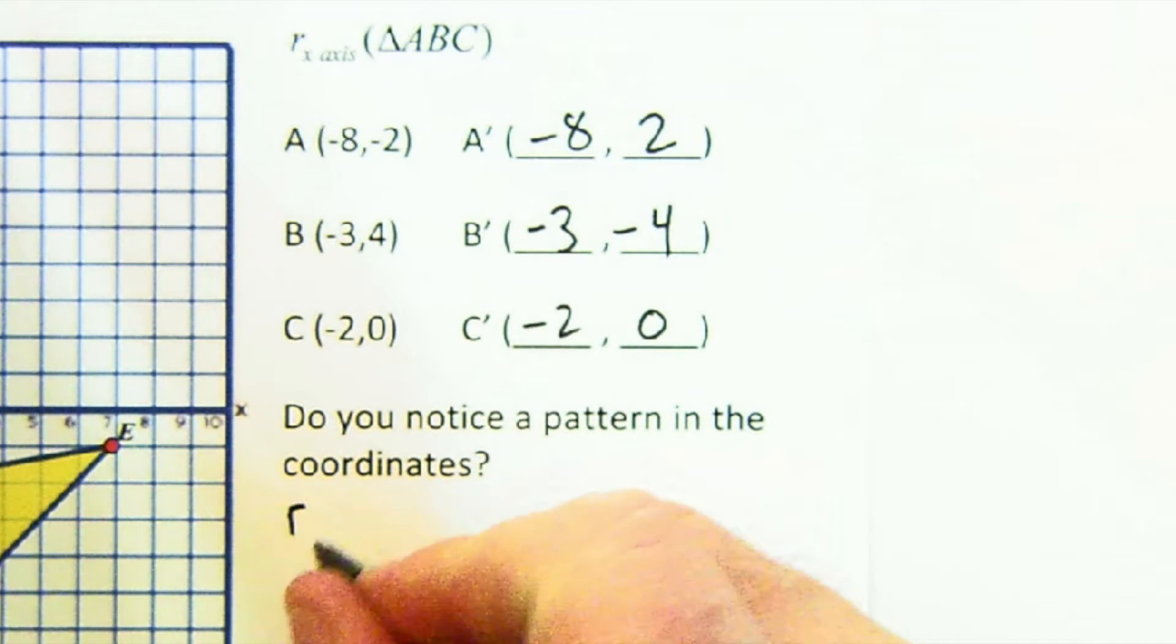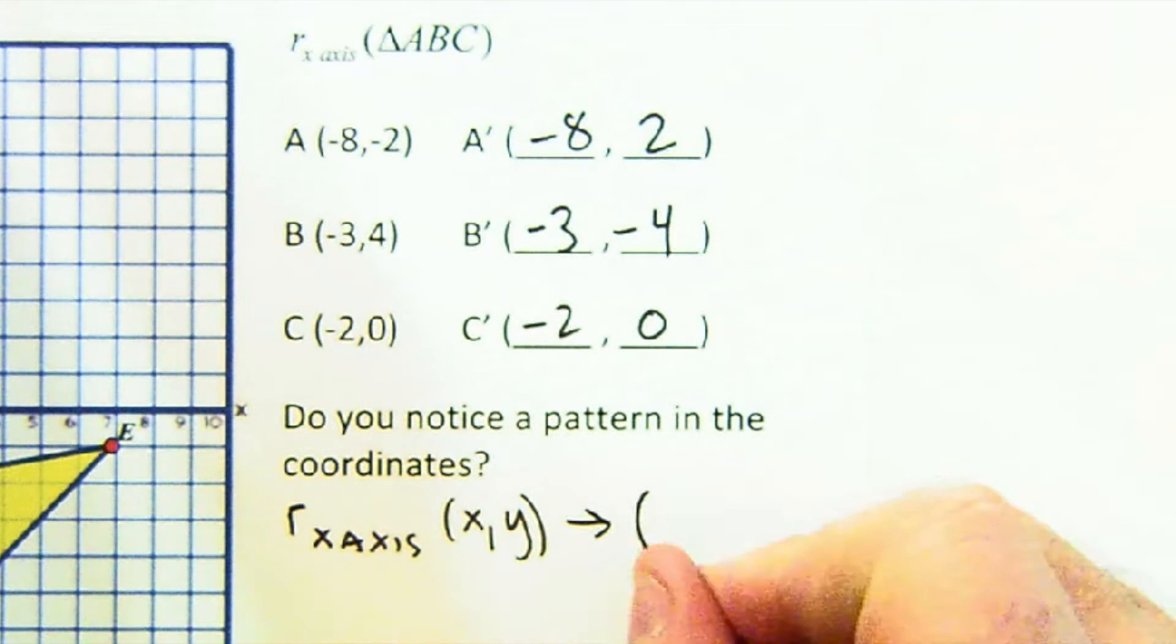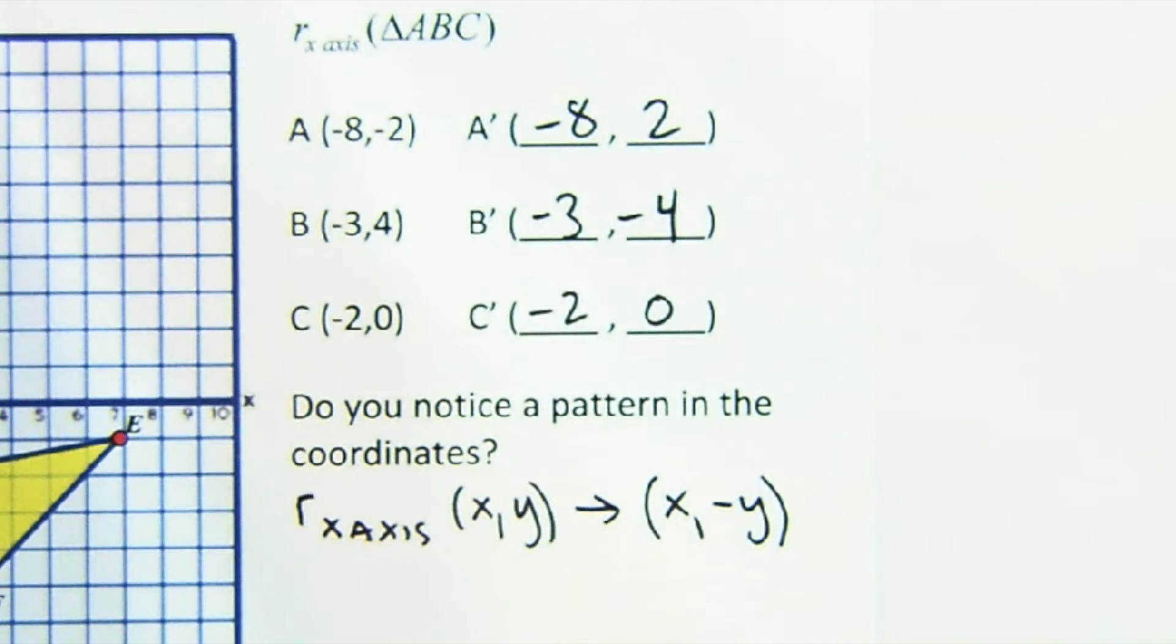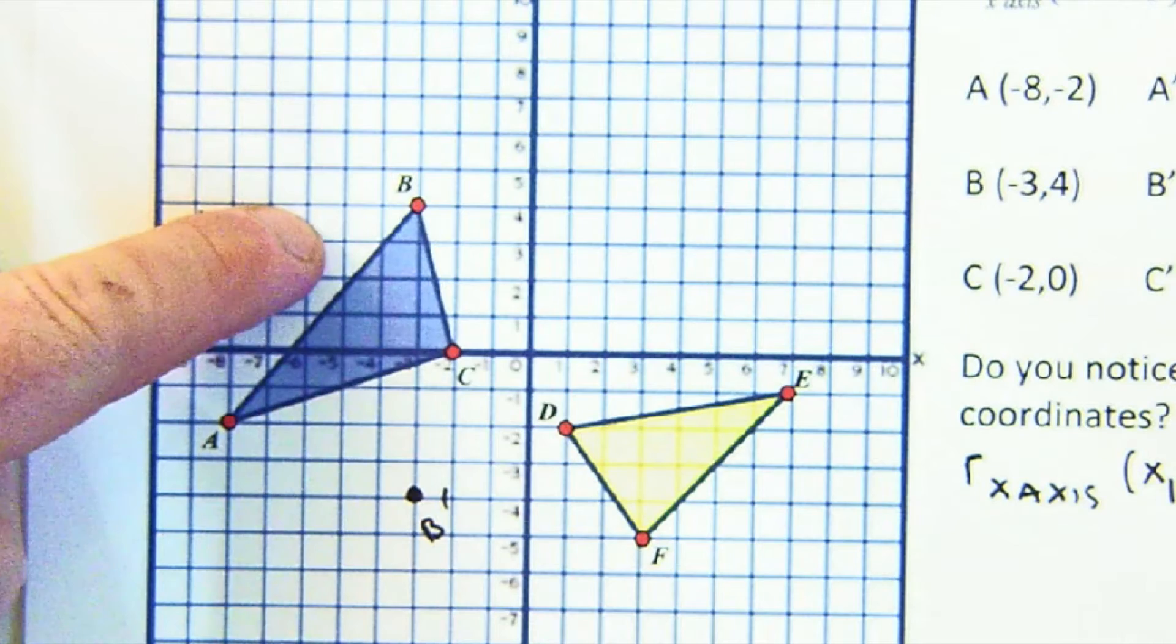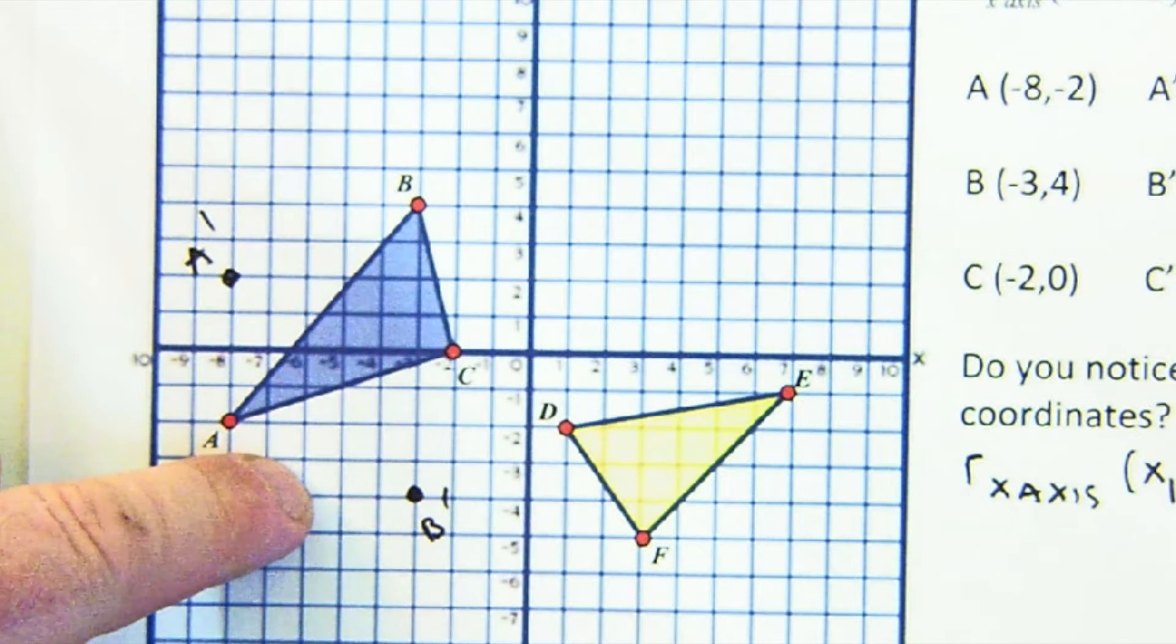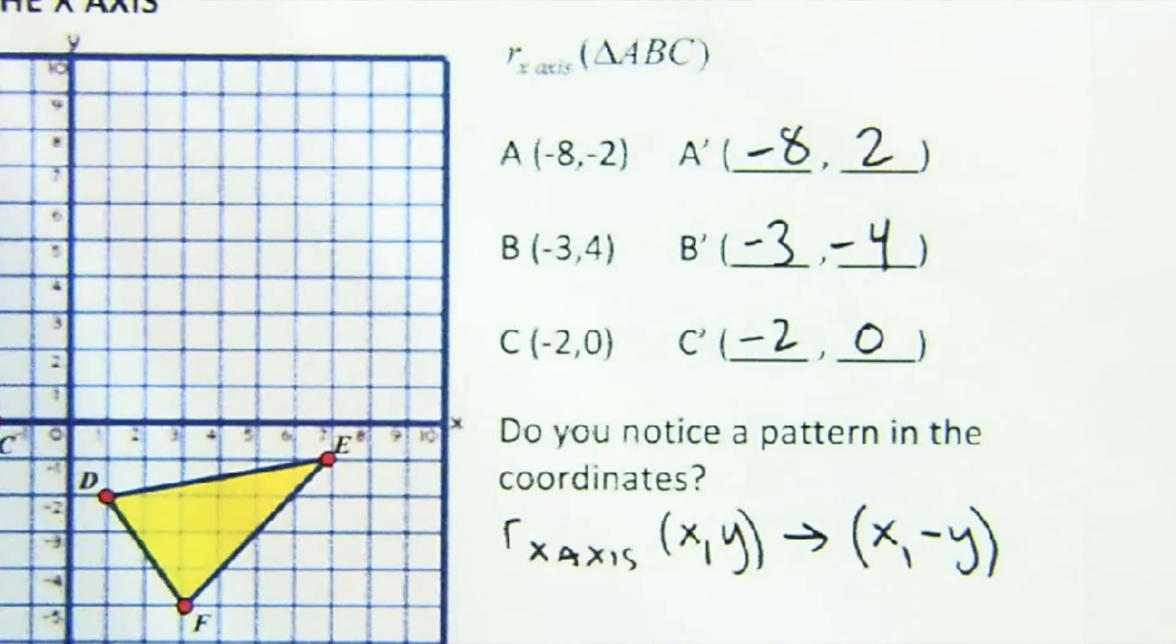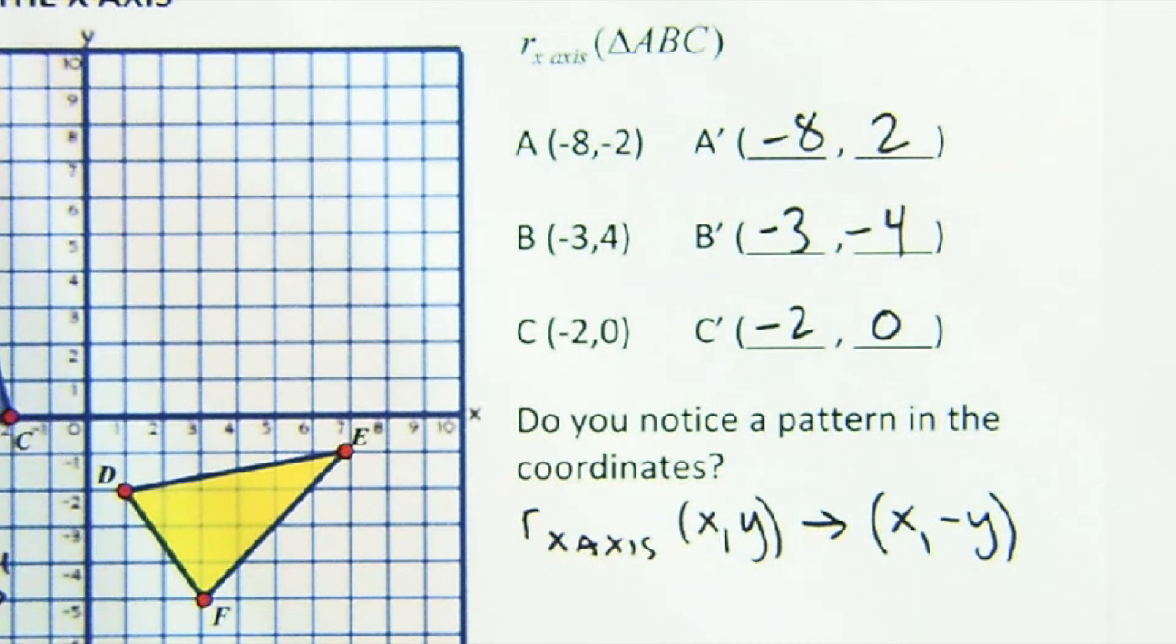X stayed the same, so we're reflecting in the x-axis. It takes a point x comma y, and it leaves x all alone, and it negates the y value. And the reason it negated the y value is because points that are above get reflected below, changing in the y. The points below get reflected above, changing the y, but not the x. Remember, things move in a parallel manner when you reflect. They're all perpendicular to the same line, and so they all move in a parallel manner.